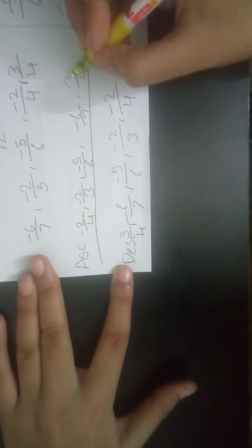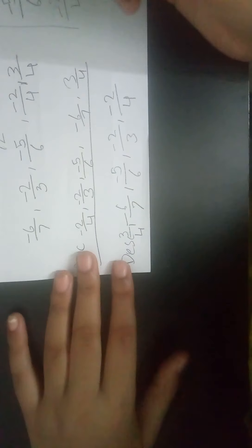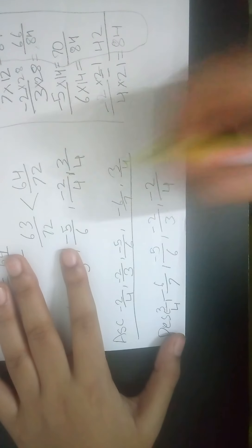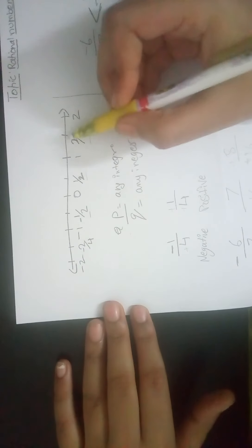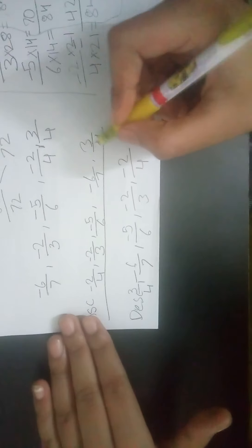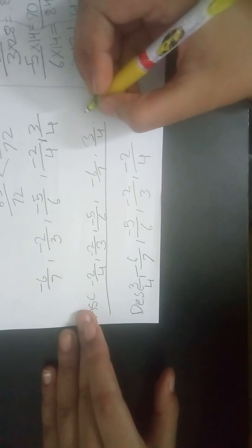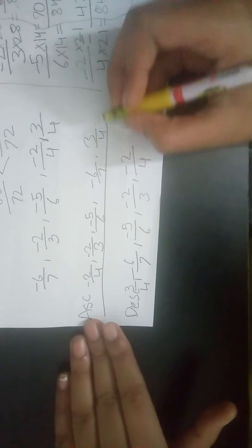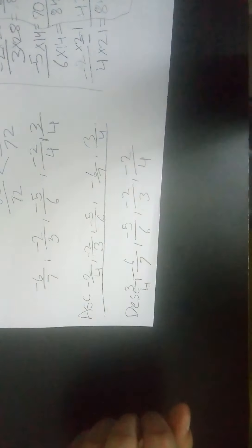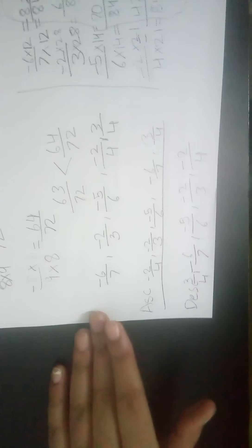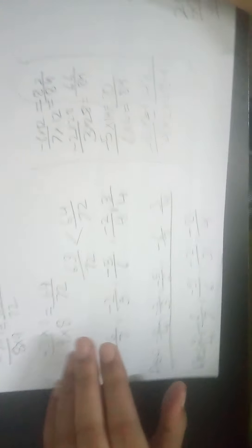All positive numbers will always be more than negative numbers, so without any calculation, a positive rational number is placed as the highest. However, if you have two positive rational numbers, you still need to find their LCM and compare them. Thanks for watching this video.